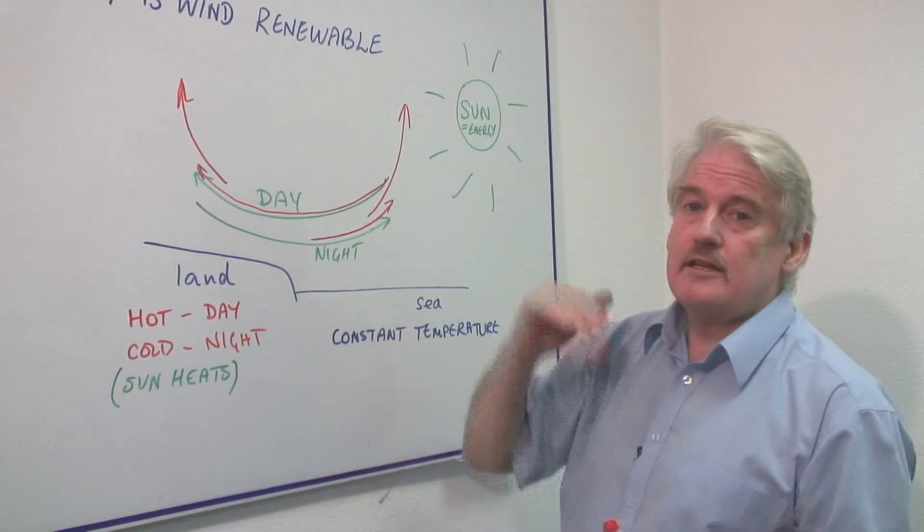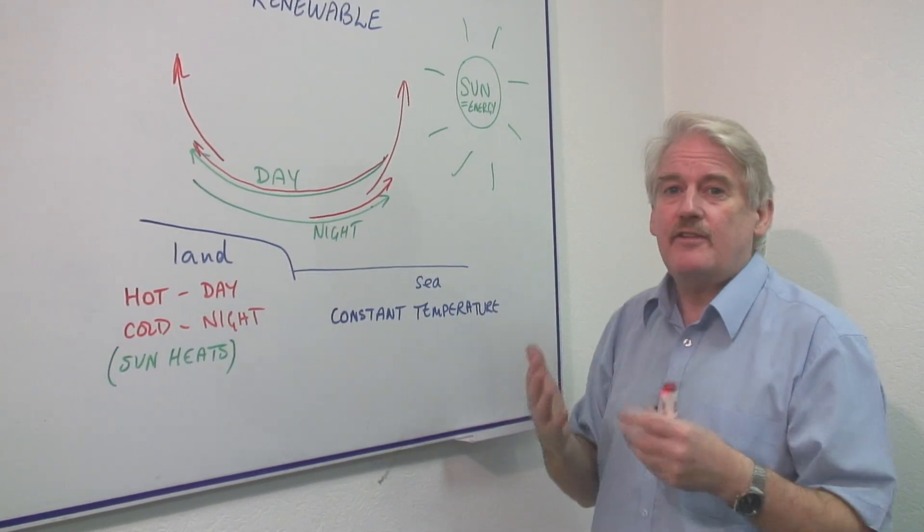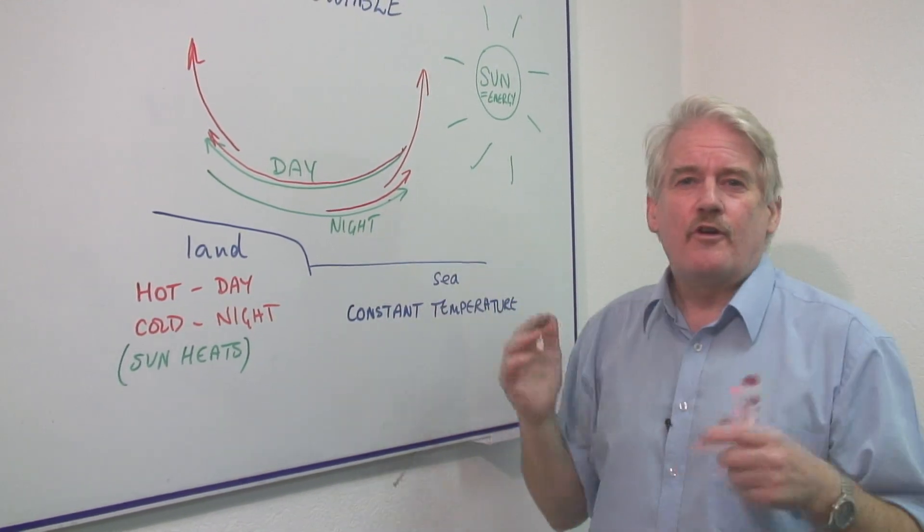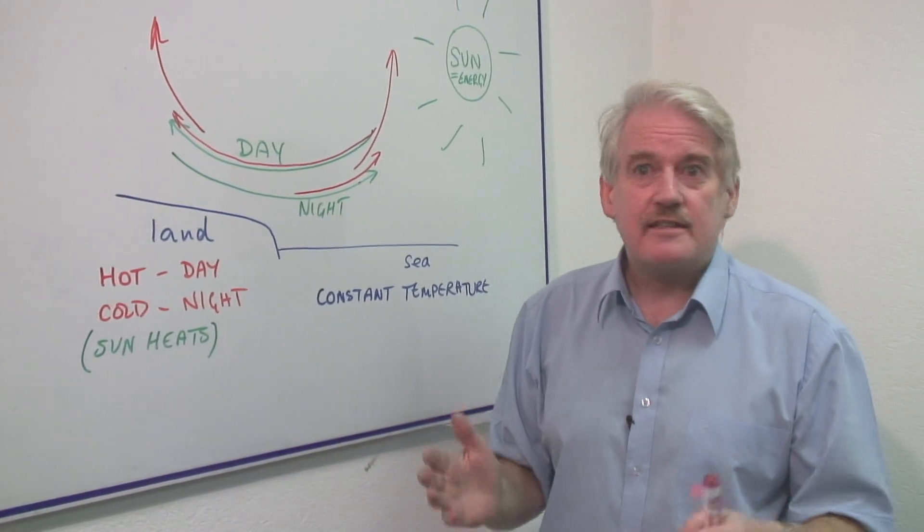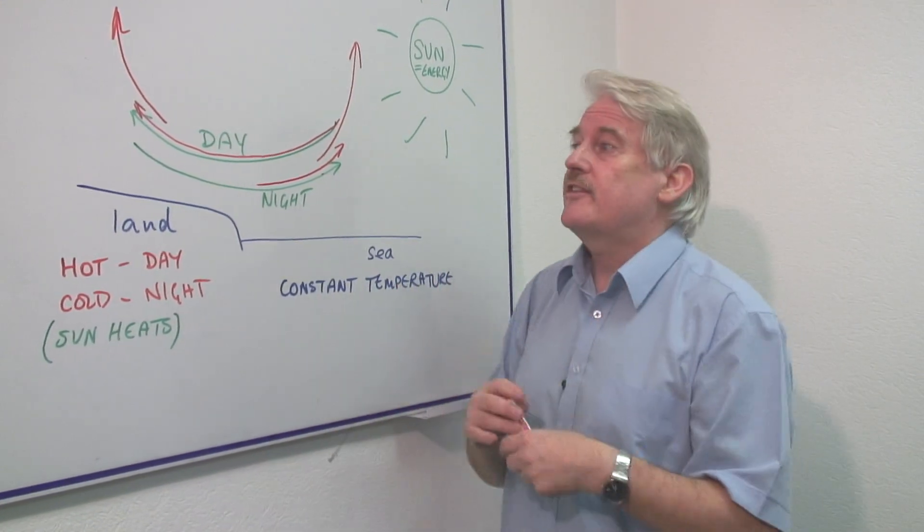We can say, therefore, it is renewable because the sun's capacity for giving us this energy is almost infinite. The sun has been there for several thousand million years and will continue to be there similarly, giving out this energy.